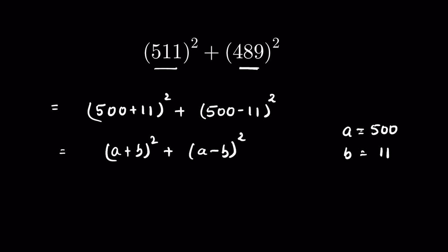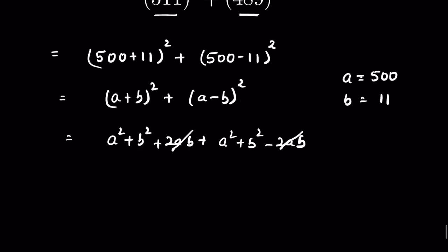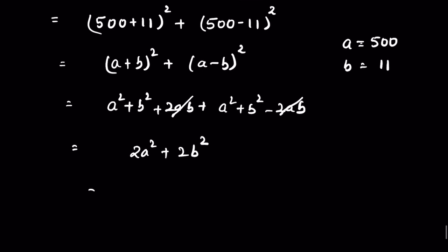If we expand (a+b)², then it is a² + b² + 2ab plus a² + b² - 2ab. So this 2ab and 2ab get cancelled, and we have 2a² plus 2b², or we can take 2 as common. So 2(a² + b²).